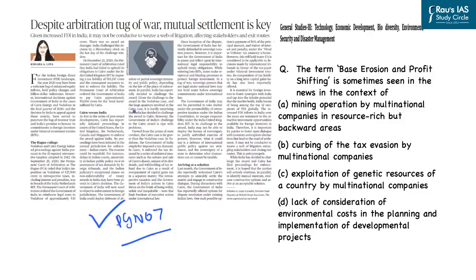Similarly, the court of arbitration ruled that India failed to uphold its obligation to Cairn Energy under a bilateral investment treaty signed between India and the United Kingdom. The court ordered the government of India to pay Cairn Energy approximately rupees 9,000 crore for the harm suffered due to adverse policies followed by the Indian government.